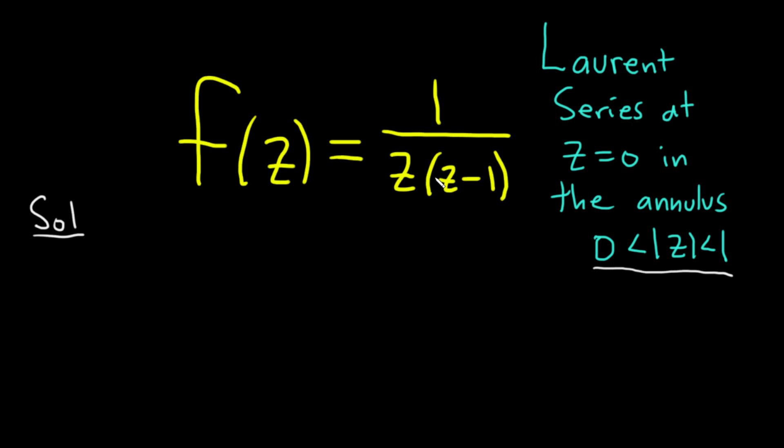The first thing we're going to do is rewrite this function in a simpler way. We're going to break this up into two simpler functions. So this is 1 over z, and then here we have z minus 1.